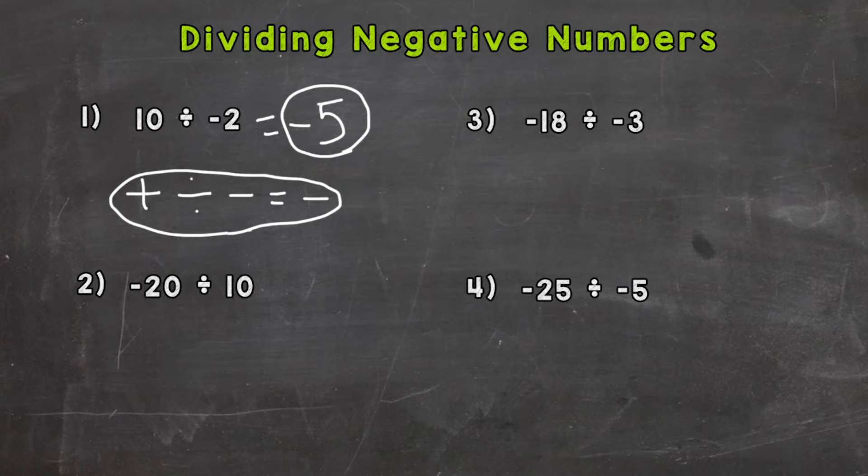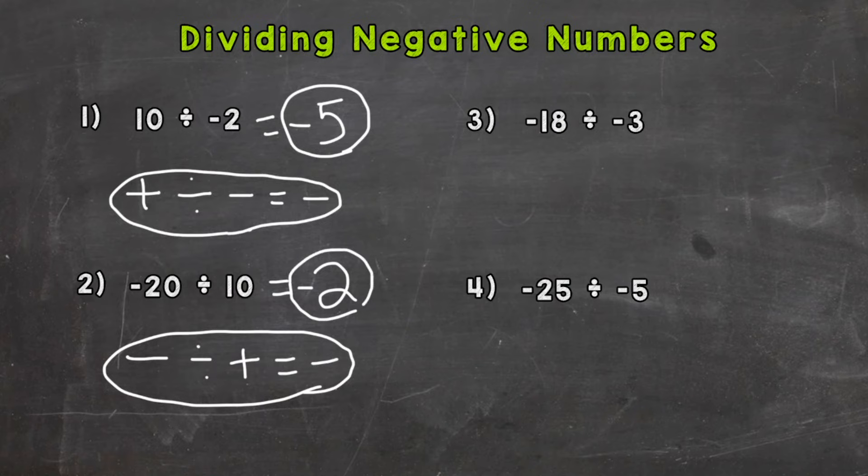Let's take a look at number 2 where we have a negative divided by a positive. The first thing we need to do, 20 divided by 10 gives us 2. Whenever we have a negative divided by a positive, our answer is going to be negative. So this is automatically negative 2 because we have a negative divided by a positive.